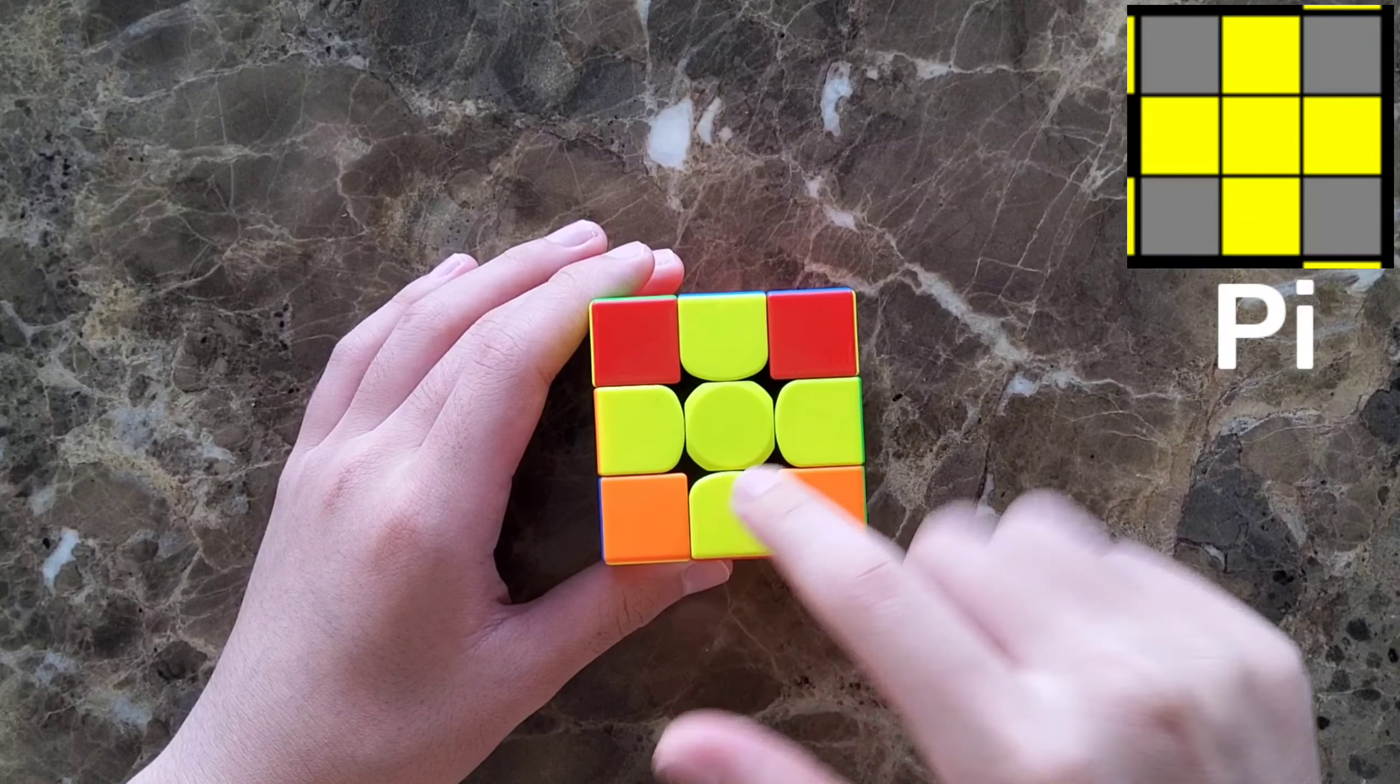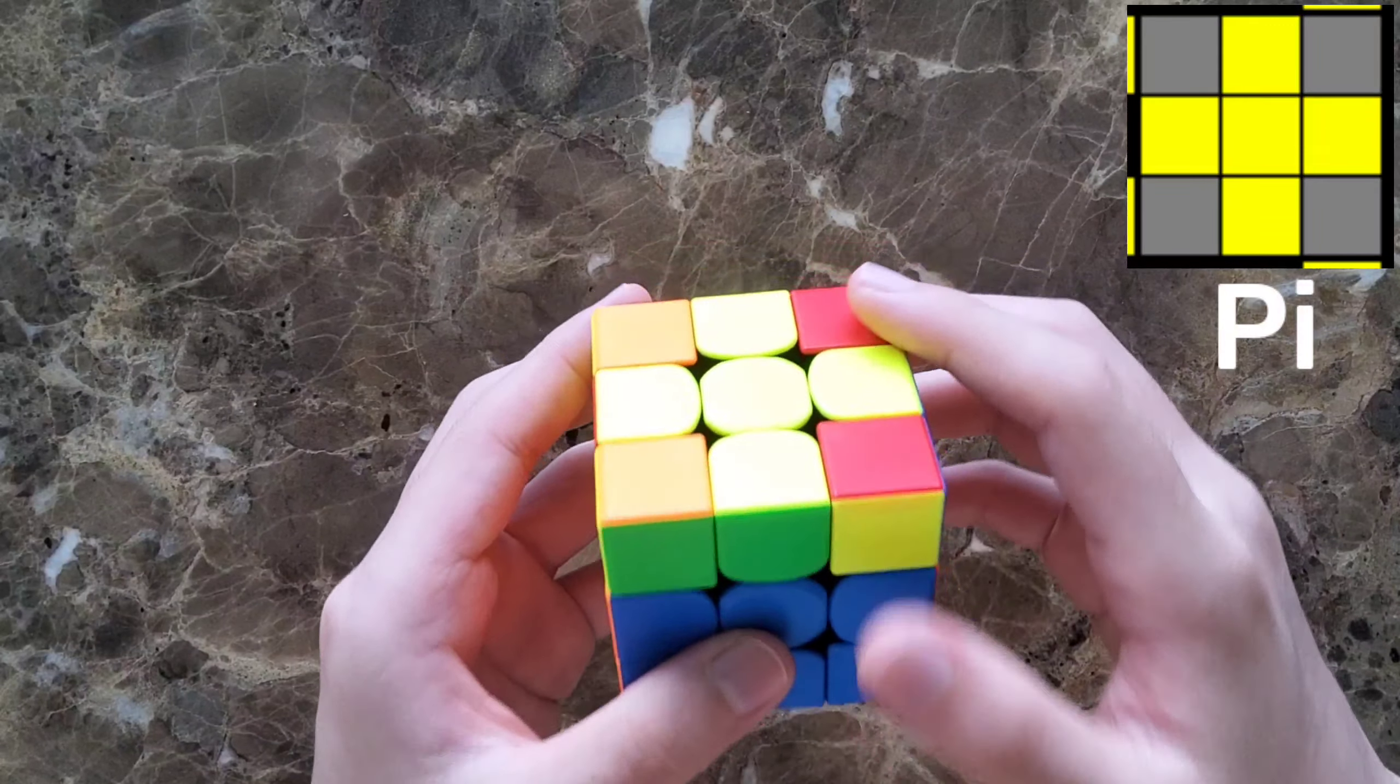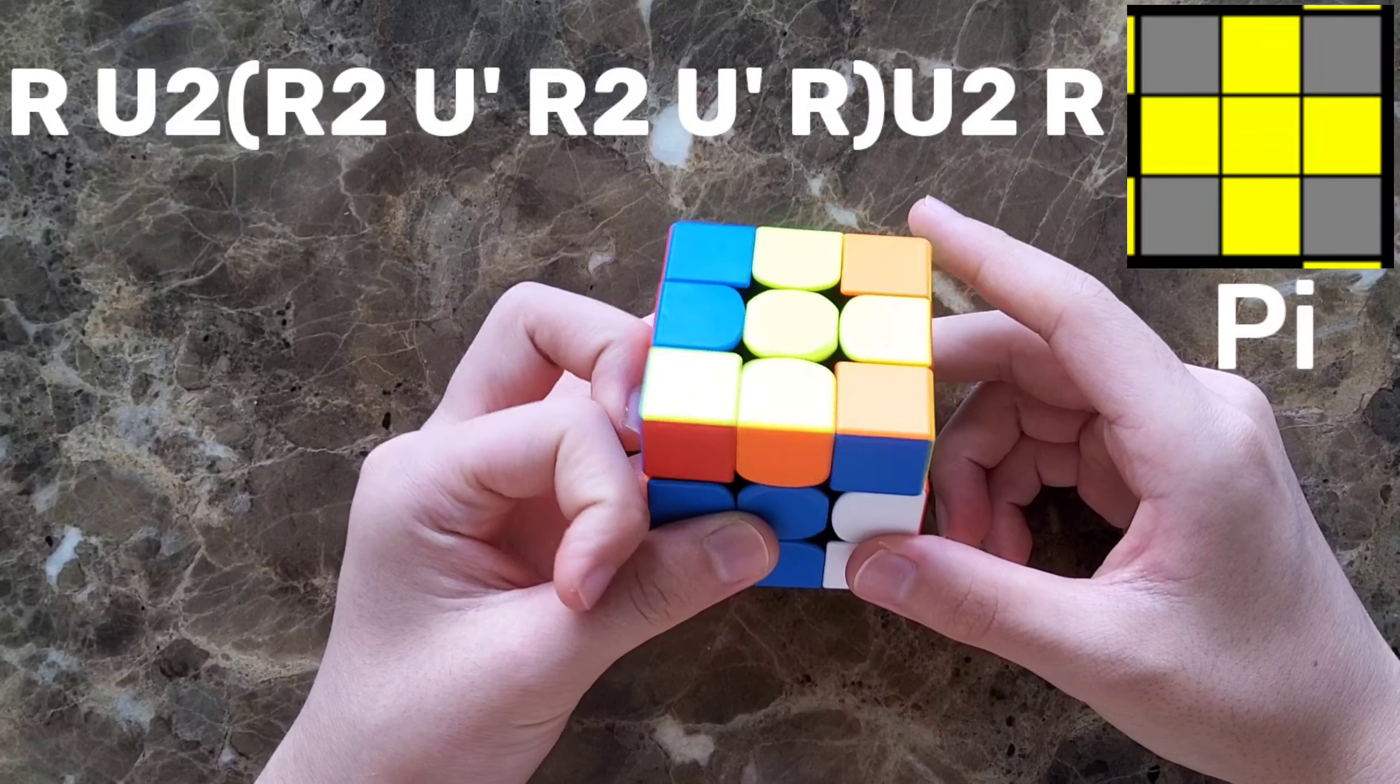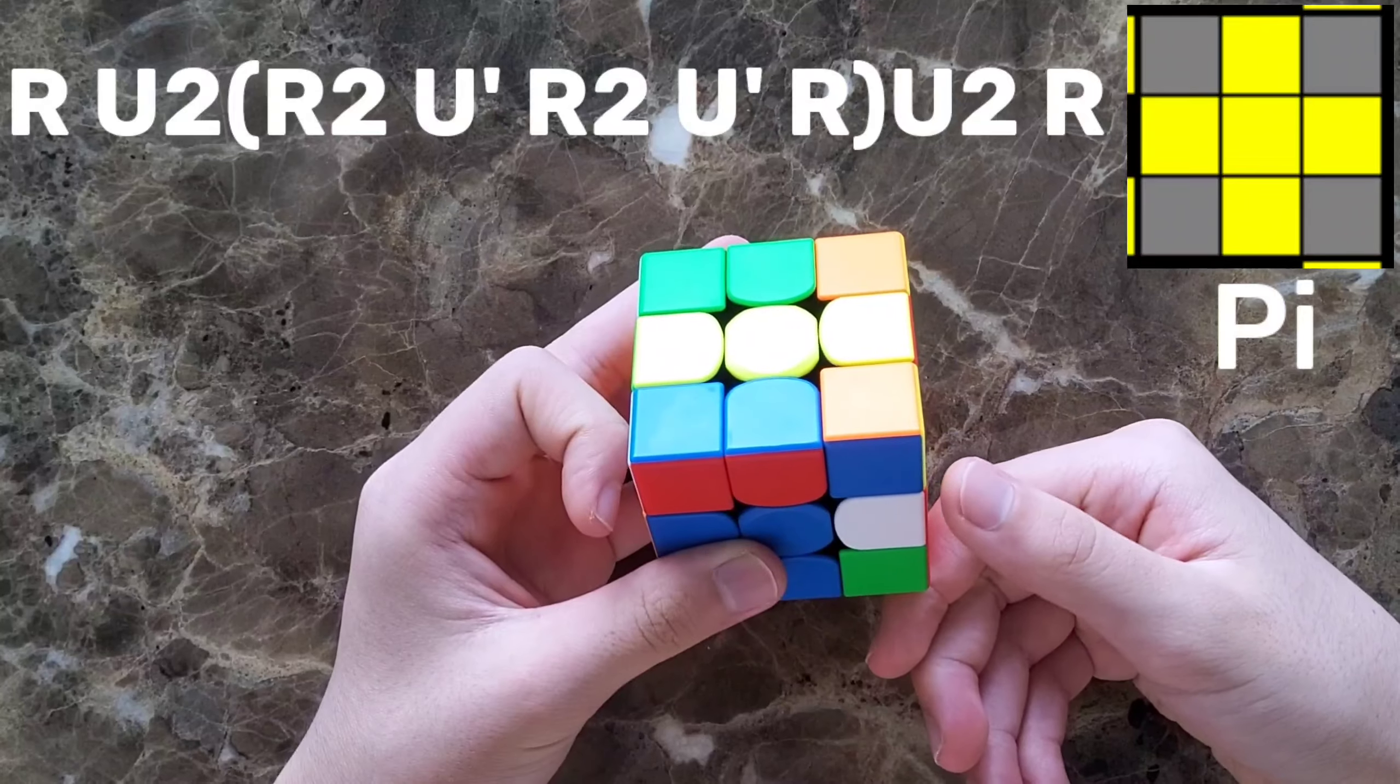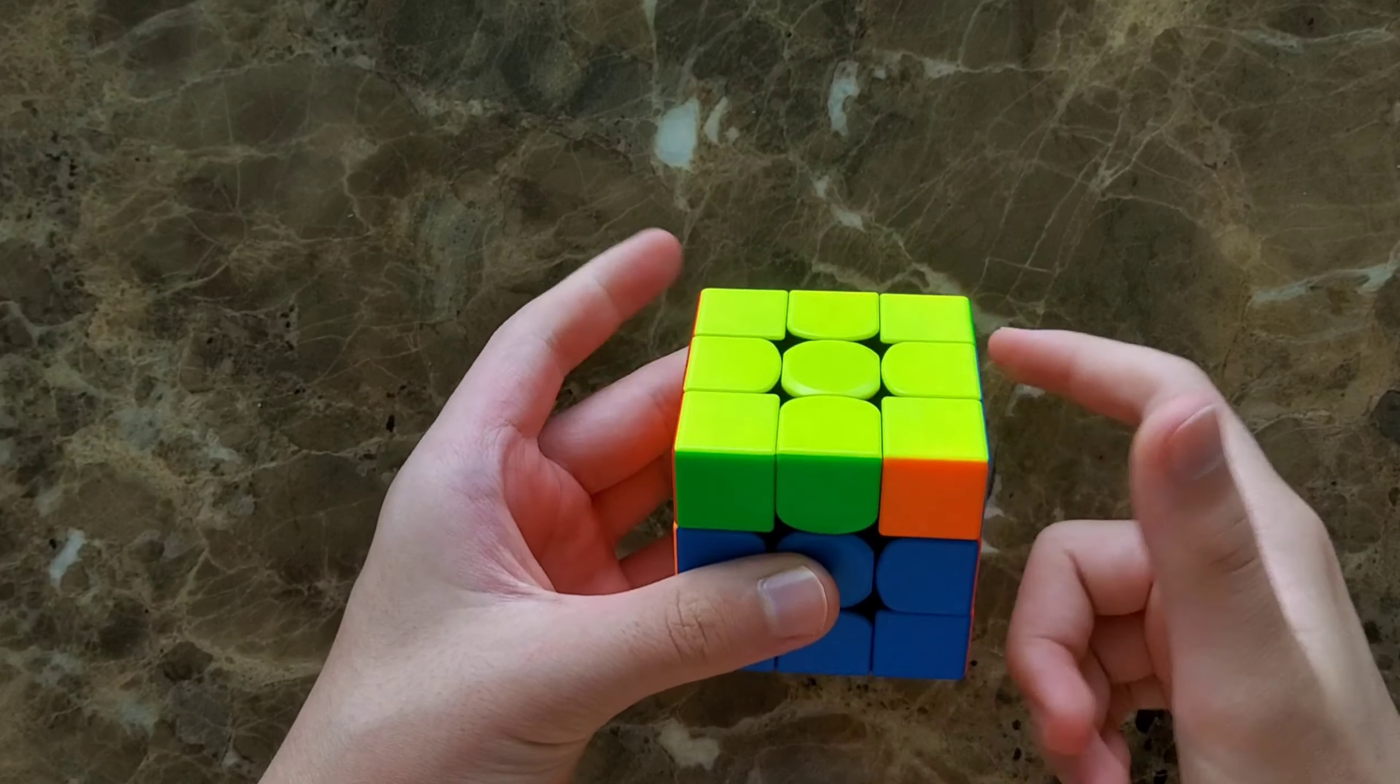The next one is there's a yellow cross, and then there are 2 yellows on the same face and 1 in the upper side. Then you look here and start the algorithm.